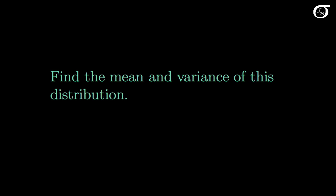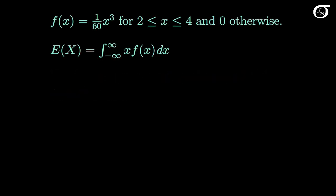Suppose the point of interest for us is finding the mean and variance of this probability distribution. Here I've written out the PDF, and we're looking for the mean. I've written out the expectation of x here, which is another name for mu, the mean of the distribution. For a continuous random variable, the expectation of x is equal to the integral from minus infinity to infinity of x times f dx.